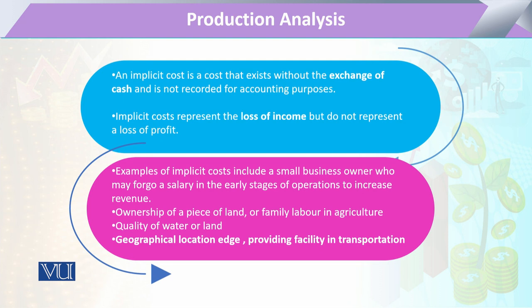Likewise, the geographical location of a particular business point — where transportation is easy — is another example. In an agricultural setup, the quality of water or the quality of land is a hidden factor. Sometimes we cannot do the proper valuation or pay the cost for it, but it has to be accounted for because it contributes to production. In this manner, there can be certain hidden parts in our production procedure where an input or resource contributes but is not recorded in the form of explicit cost. The opportunity cost of utilizing such resources should also be recognized.